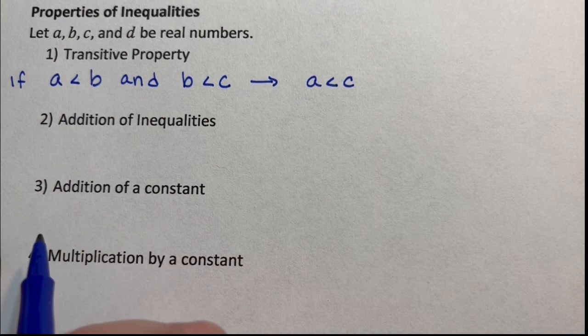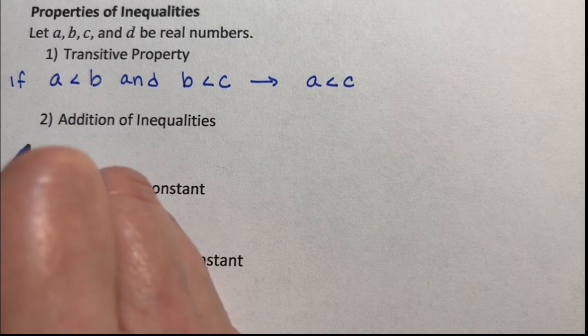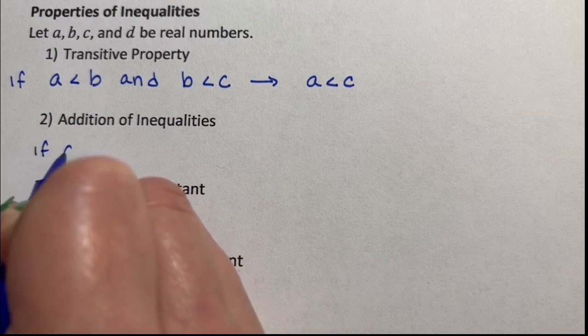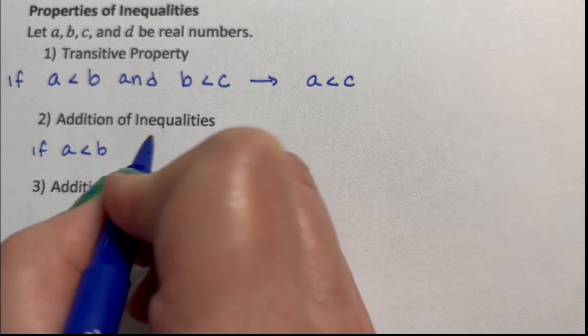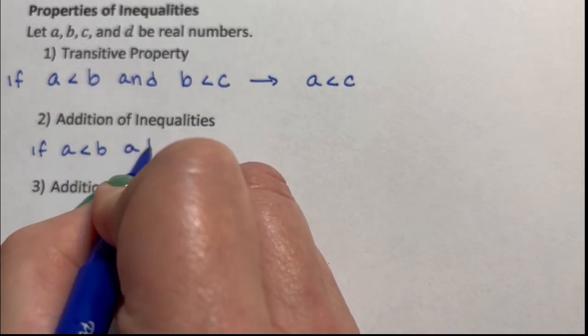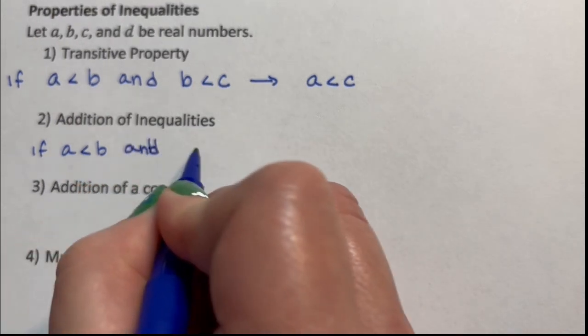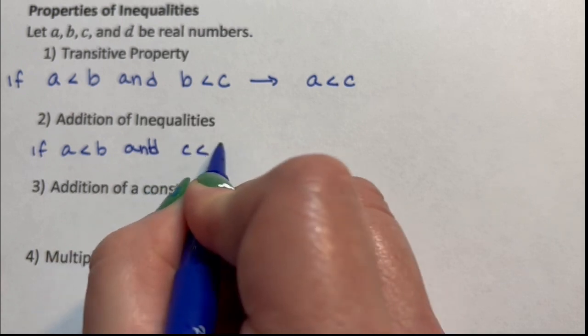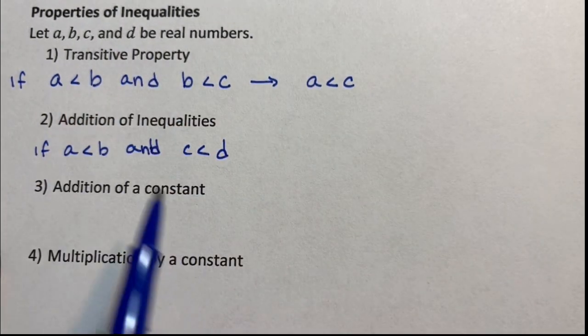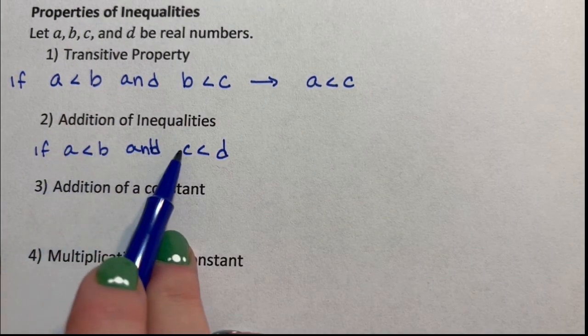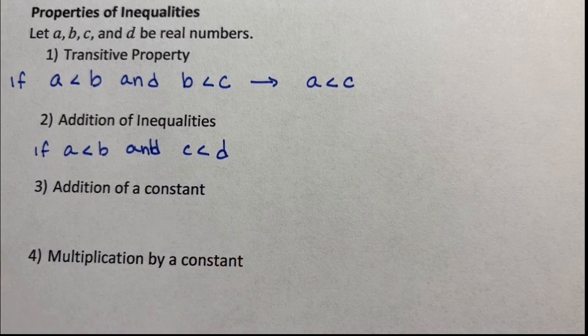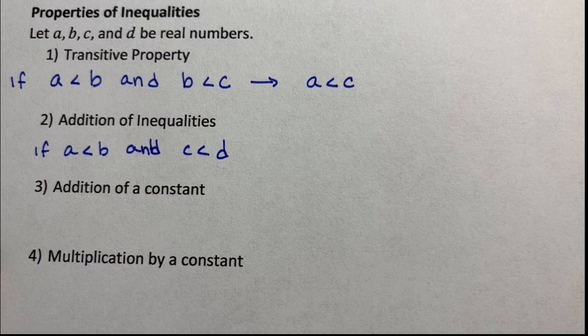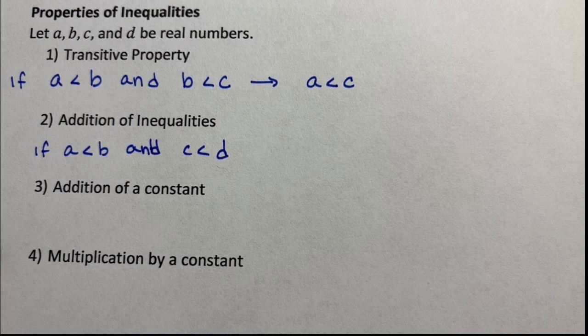So now we have addition of inequalities. The first one says, if A is less than B, so again, negative 100 and zero, and this time we're going to say C is less than D. So we're bringing in that D. This could be like 1, 2, 3, 4, but it also could be like 0, 10, 5, 15. There's no relation between A and B, and C and D. It's just that A is less than B, and C is less than D.